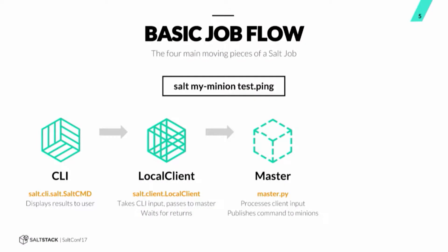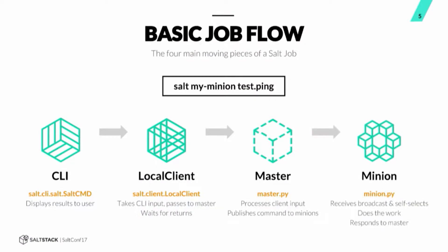We're doing a salt command and we're executing this on the master. So the CLI and the local client are both located on the master. The master, which is in master.py, receives that input from the local client and then does some processing around that. After it does that initial processing, it publishes the command out to the minions. The minion is waiting for those publications, does some self-selection, and decides that this command applies to it, runs the command, and then returns that data back to the master. Then that goes back to the master, the master passes it to the local client, the local client gets it to the CLI, and the CLI displays the result.